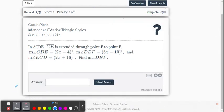Let's do one more. So on this one, in triangle CDE, CE is extended through point E to point F. And they give us some angle measure. So let's draw just a generic triangle here. I'm going to call this C, call this D, and I'm going to call this point E.